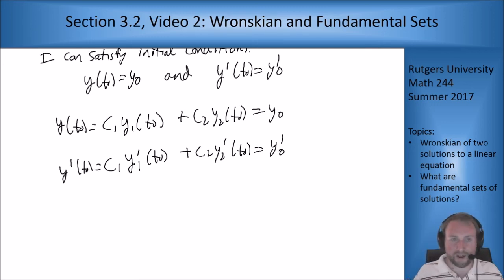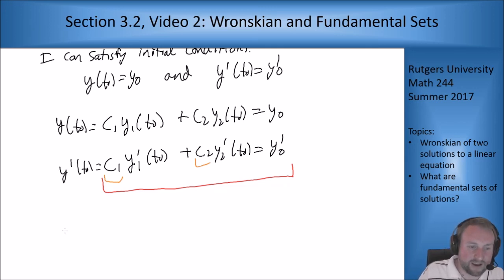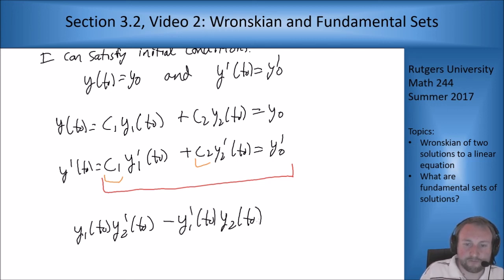Now I want to know when I can solve for the coefficients c1 and c2 in this system of equations and I want this to work for arbitrary y0 and y0 prime. If you go through the elimination method to try to solve this system of equations, what you find is that as long as this combination y1t0 y2 prime t0 minus y1 prime t0 y2 of t0 as long as this is not 0 then I can solve the system of equations for c1 and c2 to make this work.